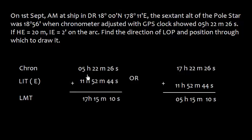We have this chronometer time which is 05h 22m 26s, but you should know that the chronometer time may be 05 or maybe 17 hours. So the chronometer time could be 05h or 17h. Chronometer time is given in the format of 0 to 12 hours.